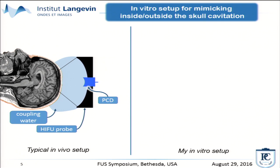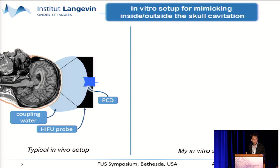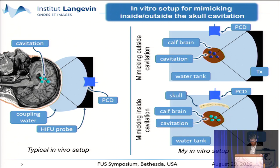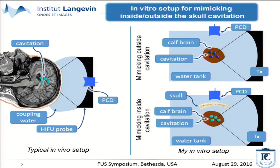The previous diagram showed a typical in vivo setup, but I worked in vitro. Here is the setup I used for mimicking thermal necrosis in vitro. The first configuration is for cavitation outside the skull: I only use a transducer that sonicates a calf brain sample, a PCD, and records the acoustic response of microbubbles. The second one mimics cavitation inside the skull — I simply add a skull sample in front of my PCD. But cavitation, as you know, is a random phenomenon.